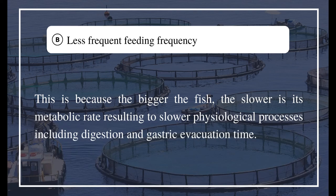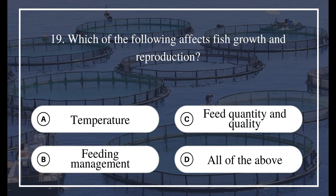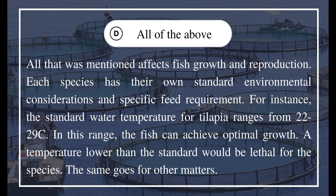Question 19: Which of the following affects fish growth and reproduction? A) Temperature, B) Feeding management, C) Feed quantity and quality, D) All of the above. The answer is D) All of the above. All mentioned factors affect fish growth and reproduction. Each species has its own standard environmental considerations and specific feed requirements. For instance, the standard water temperature for tilapia ranges from 22–29°C, within which the fish can achieve optimal growth; a temperature lower than this would be lethal.